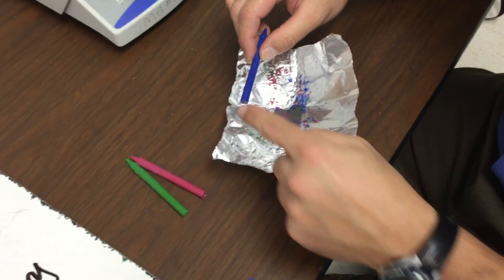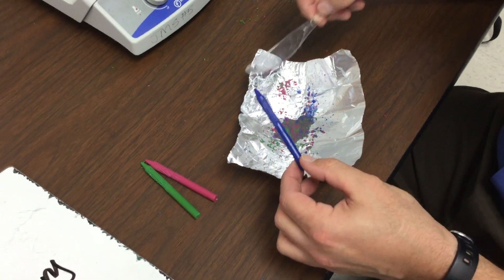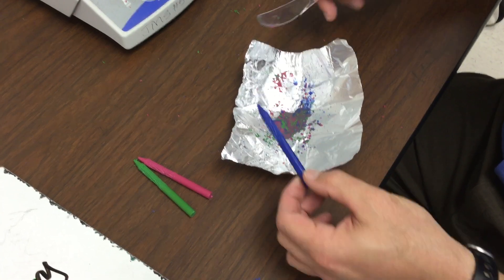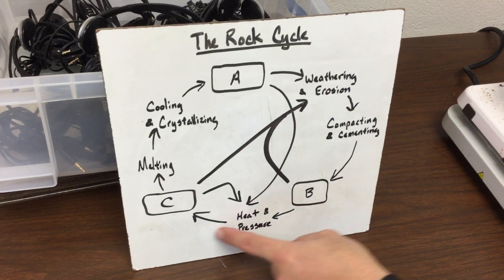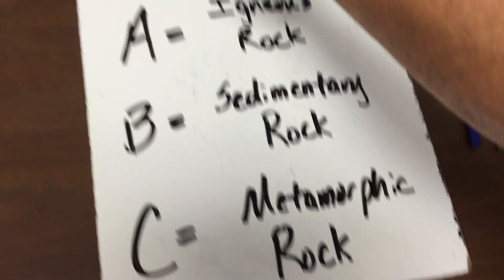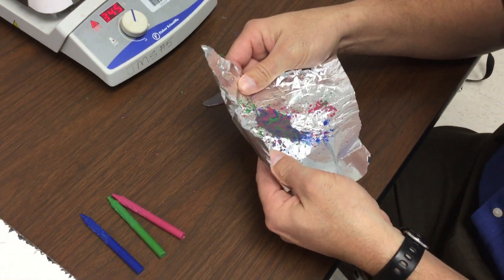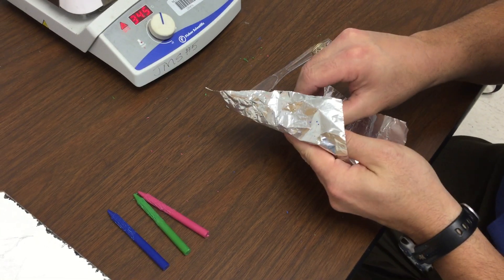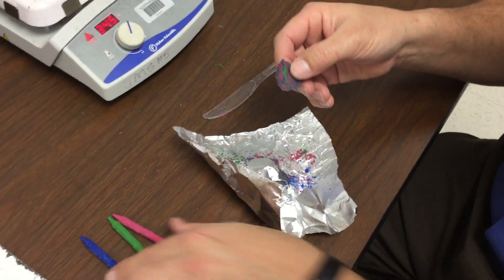When we started with the original igneous rocks, it was our crayon in pure form — just that one color. We could erode it down with our knife through the process of weathering and erosion. We can compact and cement it to turn it into a sedimentary rock. After that, we used gentle heat and some pressure to turn it into metamorphic rock, represented by turning B into C. And finally, we do the melting and the cooling and crystallizing, which results in our new igneous rock. Our new igneous rock is now a combination of our three original colors.